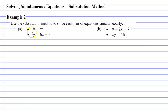We'll start with question A. We've got y is equal to x squared, and we've got y is equal to 6x minus 5. So what are we going to substitute here? Well, if y is equal to x squared, that means we can replace y in the second equation with x squared. This will give us x squared on the left and 6x minus 5 on the right.